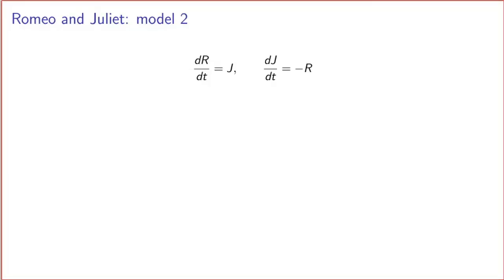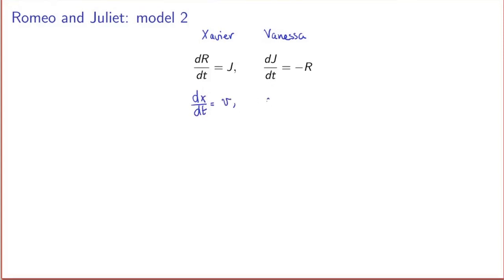Let's go back to model number two. What if Romeo's name was Xavier and Juliet's name was Vanessa? Then R(t) becomes x(t) and J(t) becomes v(t), and the equations become dx/dt = v and dv/dt = -(k/m)x. This turns out to be nothing else than a spring-mass system in physics — a mass connected to a wall by a spring, under the force given by the spring following Hooke's law.